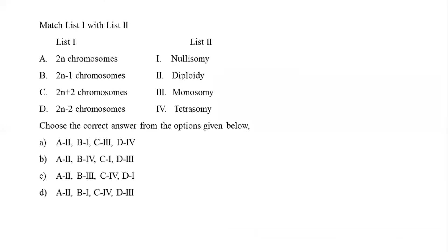The next question asks to match list 1 with list 2 regarding chromosome numbers. The total number of chromosomes in a diploid cell is described as 2N, so A matches with 2. 2N−1 is an example of a monosomic condition, where an individual has one chromosome less than the normal somatic number, so B matches with 3. Presence of one chromosome in four copies is known as tetrasomy (2N+2), so C matches with 4.